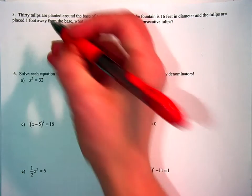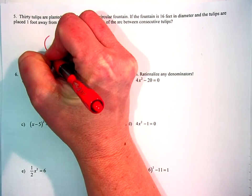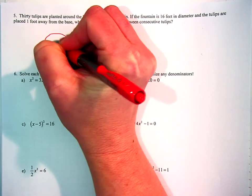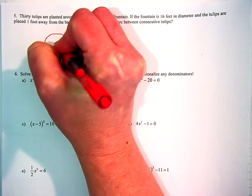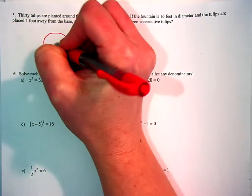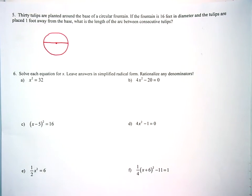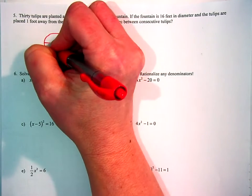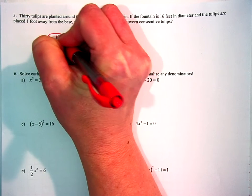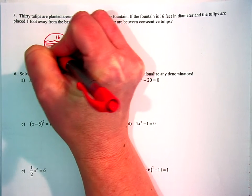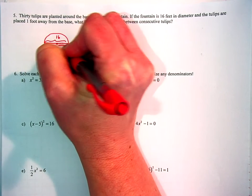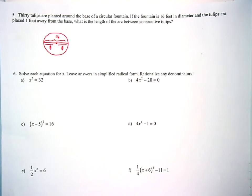Okay, so let's draw our fountain, our circular fountain like this. Here is the center of it. Let me draw in a diameter. So the diameter right here is 16 feet total. Let me draw that in here, 16 feet total, which means that a radius here is 8 and a radius here is 8.